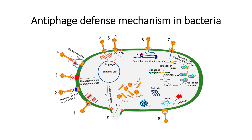The next phase is the hiding of the receptors through the formation of polysaccharide chains. This polysaccharide chain will prevent the bacteriophage from coming into contact with the receptor.